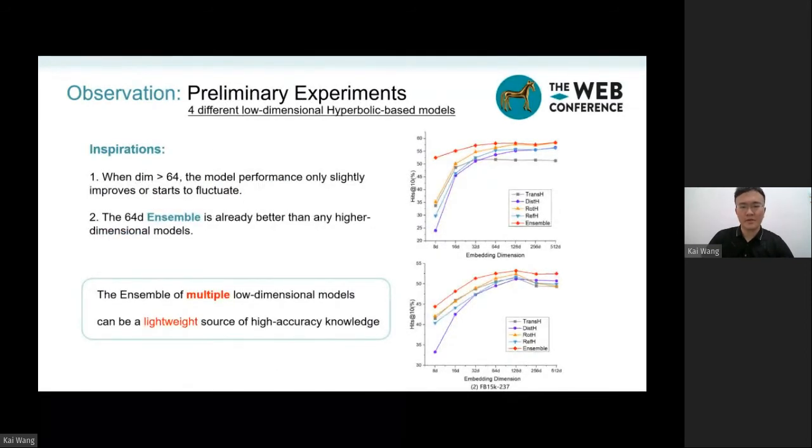To this end, we make a preliminary experiment on four different hyperbolic space models, and we observed that when the embedding dimensions are more than 64,